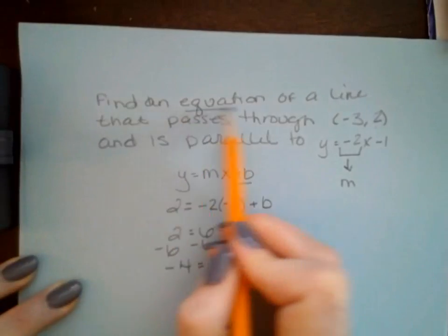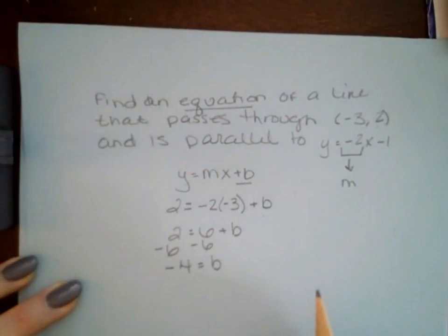Because we were asked to find an equation of the line, we have to substitute this back into our equation. y = -2x, and we know our y-intercept is -4, so y = -2x - 4.